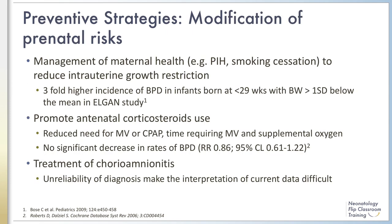Now let's talk about some strategies that have been considered for the prevention of BPD. We will start with efforts to modify the prenatal risk. Multiple studies have shown that fetal growth restriction and being born small for gestational age increase the risk of BPD. For example, the extremely low gestational age newborn study found a three-fold higher incidence of BPD in infants born at less than 29 weeks with birth weight more than one standard deviation below the mean.